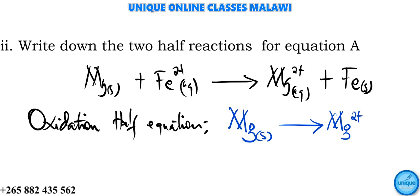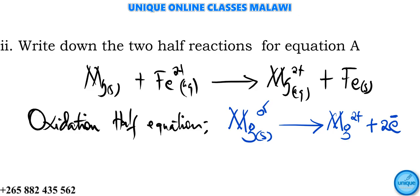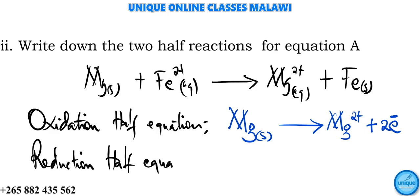To balance the half equation, we need to balance the oxidation numbers. Magnesium's oxidation number goes from zero to two-plus, so we add two electrons on the right-hand side: Mg(s) → Mg²⁺(aq) + 2e⁻. Each electron has a charge of minus one, so two electrons give minus two, which balances with the two-plus charge. For the reduction half equation: Fe²⁺(aq) → Fe(s).